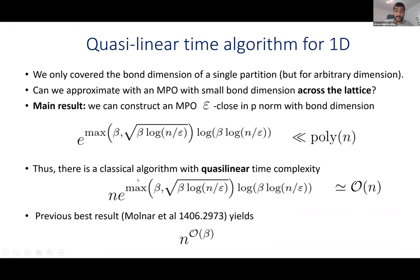This holds as long as β is not too large. When β is constant and ε is not too small, we have a sub-polynomial bond dimension. Given a description of the MPO with this bond dimension, you can use other results about MPOs to show that there exists an algorithm whose time complexity is basically the bond dimension times n — that n factor comes from having to sweep through all sites. So it's quasi-linear: linear in n times something sub-polynomial.